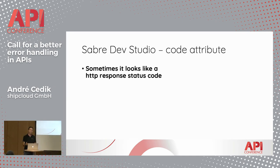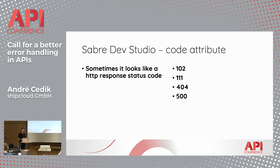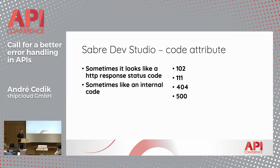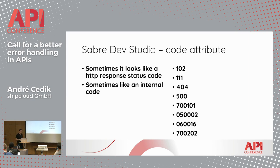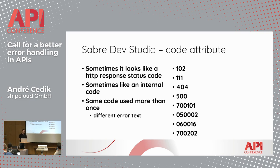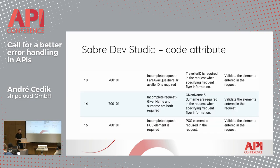The purpose of the error code is also not easy to understand. Sometimes it looks like an HTTP status code, and at other times it looks more like something that's used for handling specific error cases. Weirdly enough, those codes are used more than once, so they can have multiple meanings, as you can see in this example.